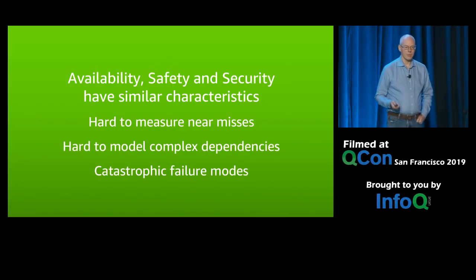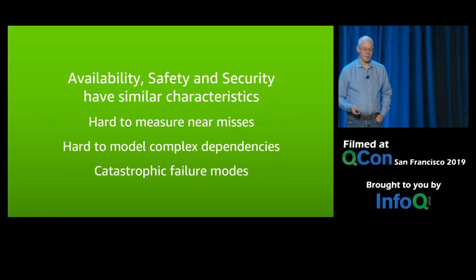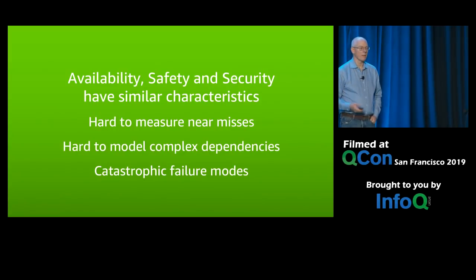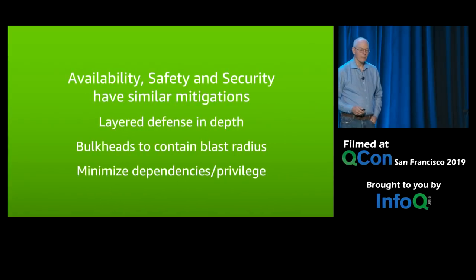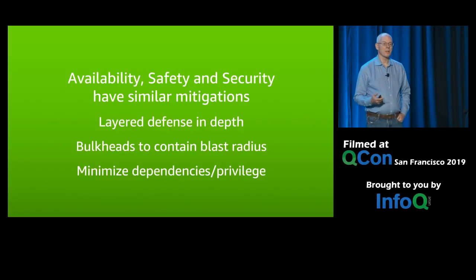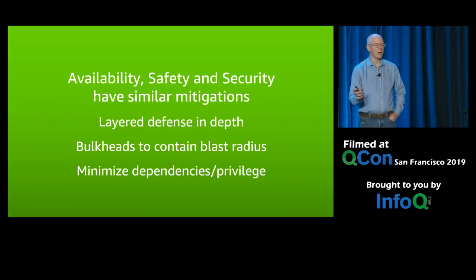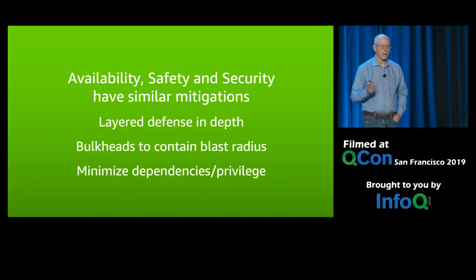We get stories almost every day: something went wrong, ran out of capacity at launch, or there's a failure, a security failure, an outage. But they also have similar mitigations. The way you protect against all these things is to have some kind of layered defense in depth — so if one thing breaks, there's another thing behind it to save you. Depending on how critical it is, there are layers of defense. That applies to security, availability, and safety. They're all the same.